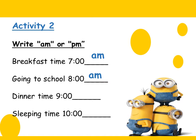Dinner time at 9 o'clock — so 9 here is PM or AM? It's PM, excellent, because it's from 12 at noon up to 11:59 at night. Sleeping time at 10 o'clock — 10 will be AM or PM? It's in the same range between 12 at noon and 11:59 at night, so it's PM. Excellent, Primary 2.